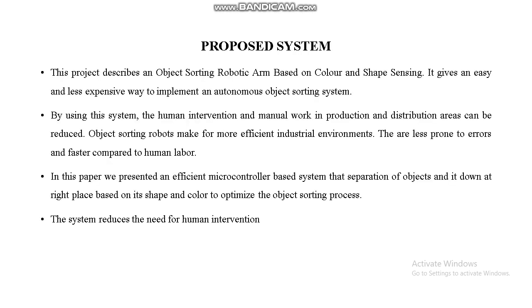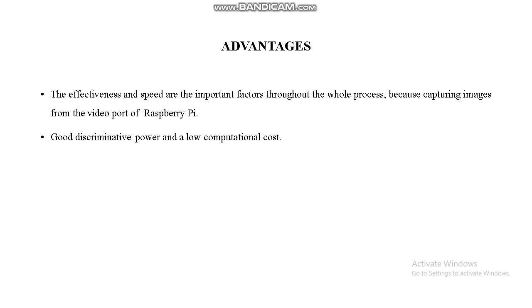In our proposed system, we are using an object sorting robotic arm based on color and shape sensing. We present an efficient microcontroller-based system where separation of objects is done with the help of color. The proposed system reduces the need for human intervention. Advantages include good discriminative power, low computational cost, and important factors such as speed and effectiveness achieved using the Raspberry Pi model.